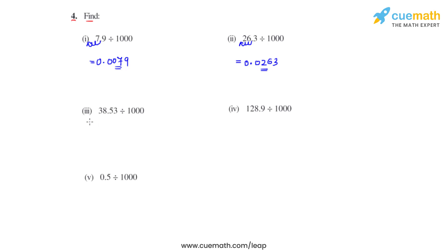Coming to the third bit where we have 38.53 divided by 1000, we will again be moving the decimal 3 places towards right and the answer for the third bit becomes 0.03853.